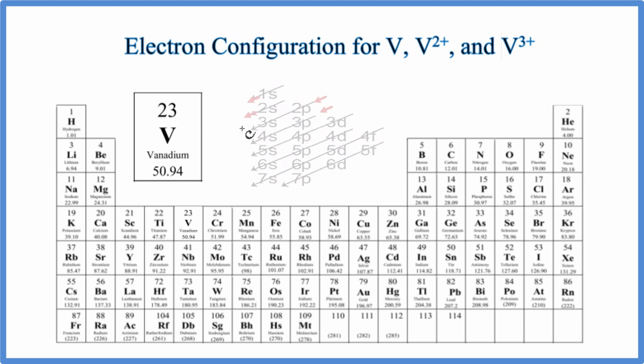There's two ways to do it. One, you can use a chart that shows you how the orbitals fill, but you can also use orbital blocks on the periodic table. I think this is a better way to do it.